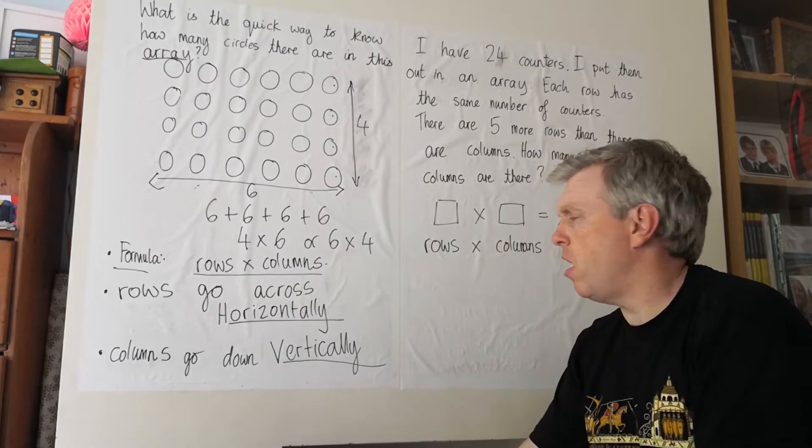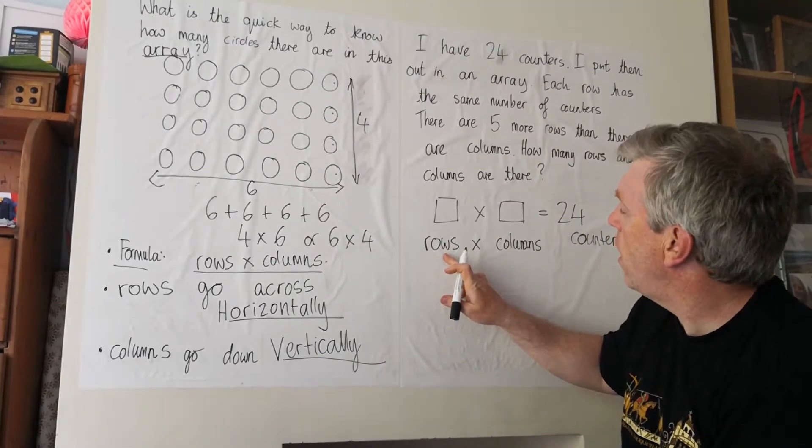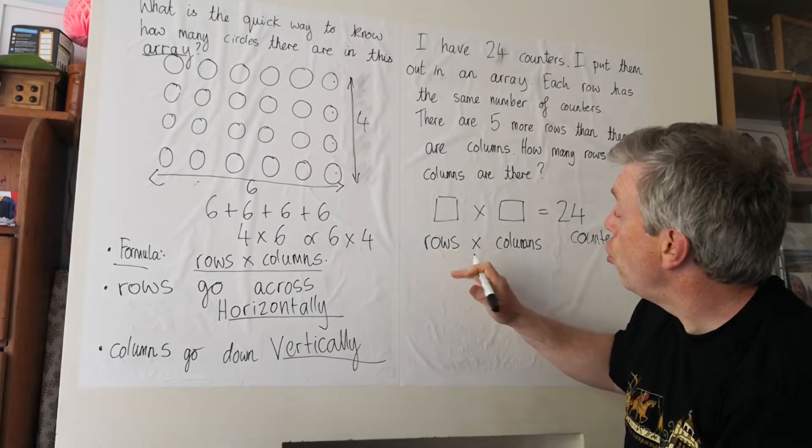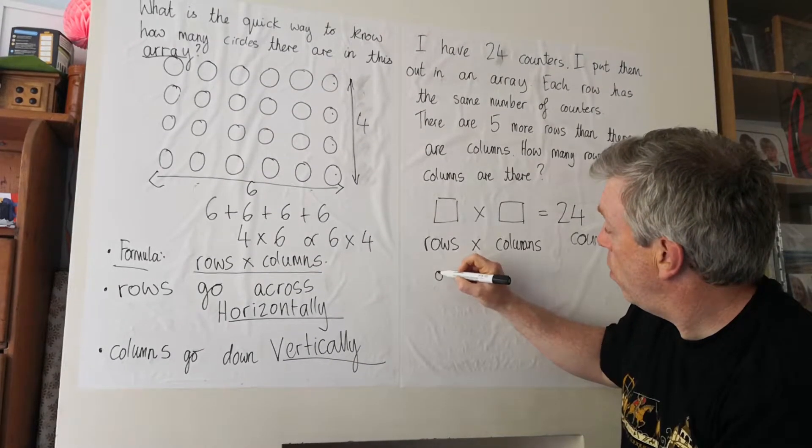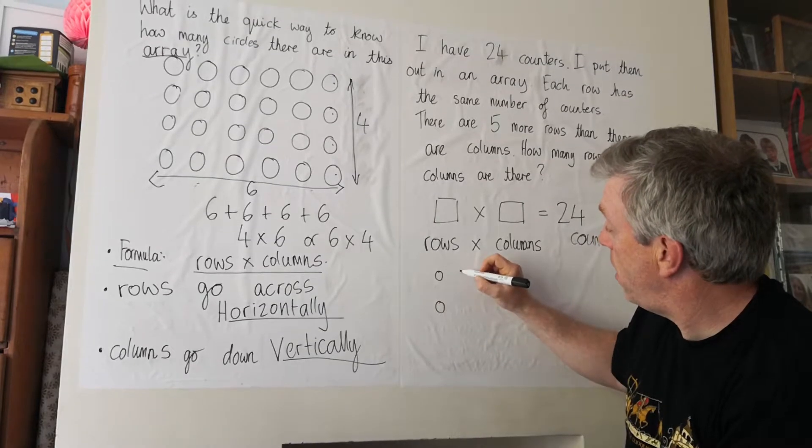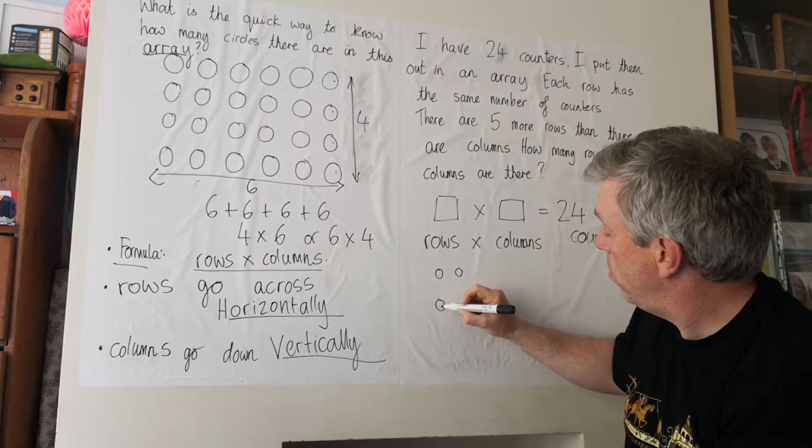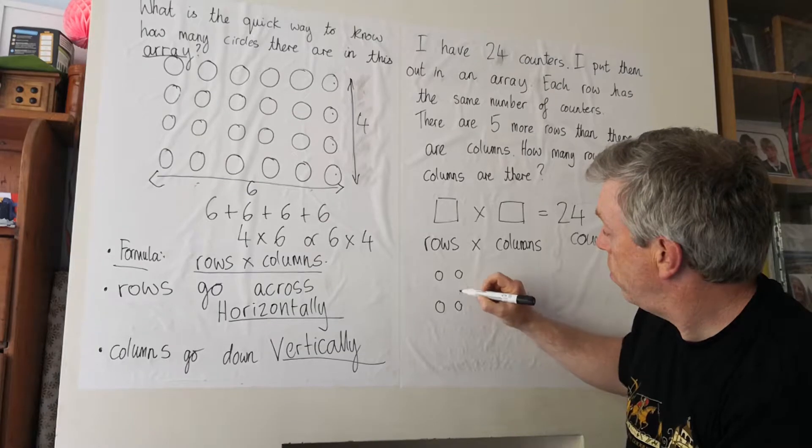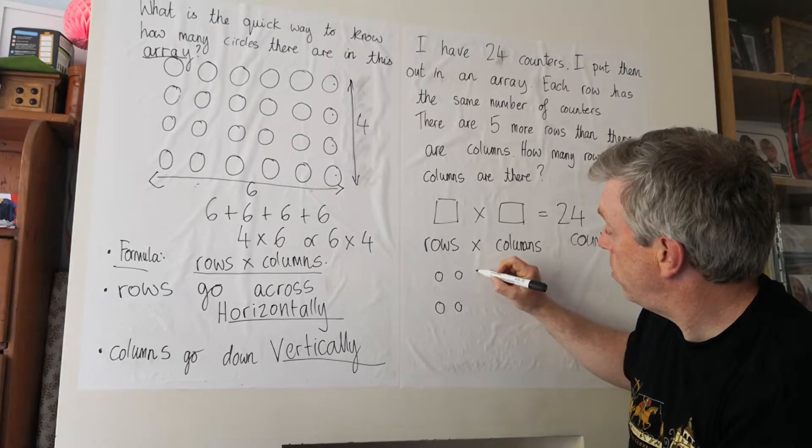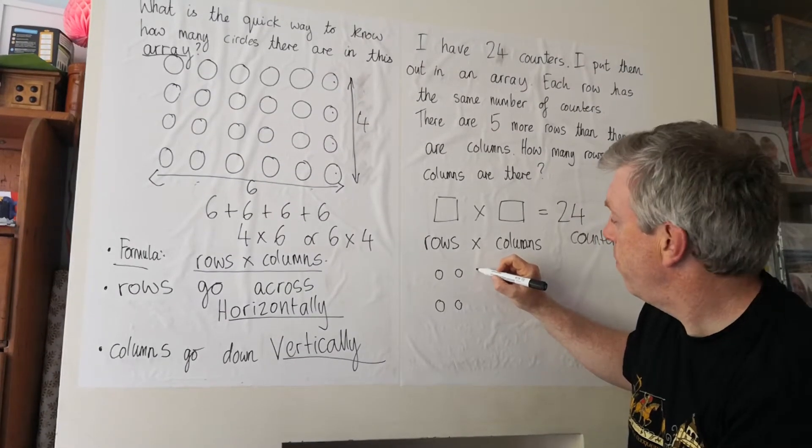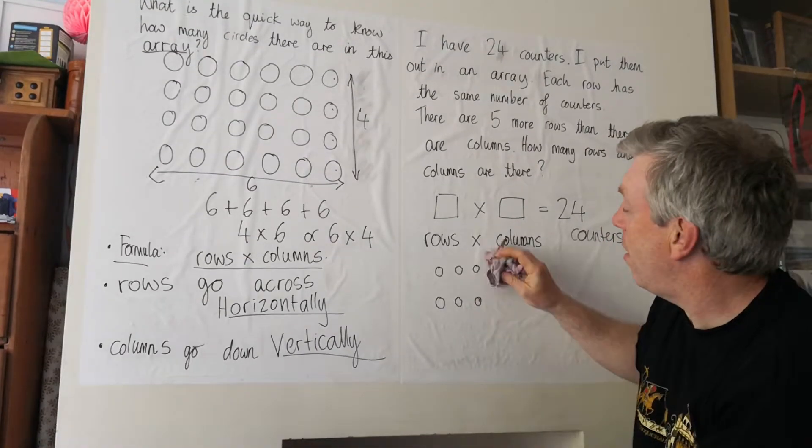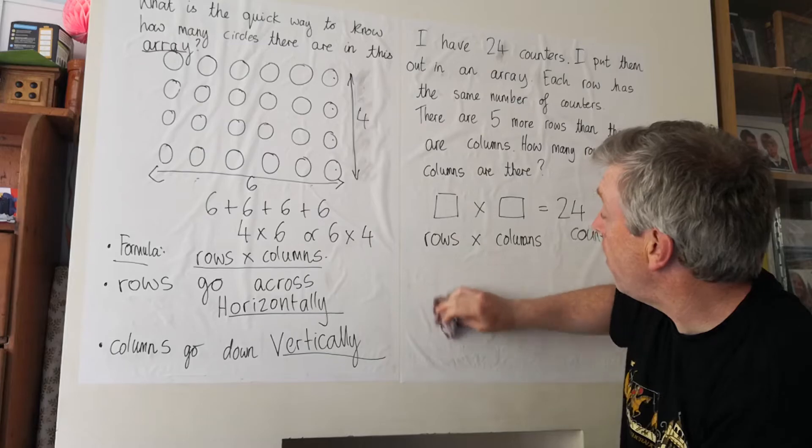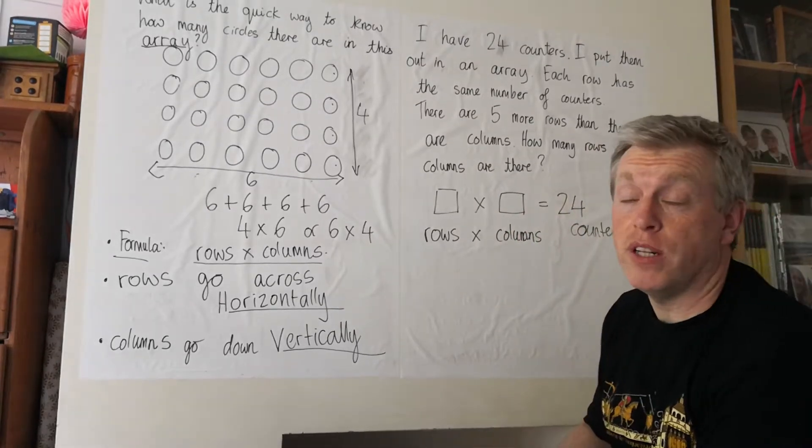It's the number of rows times the number of columns must give us 24 counters. What do I mean by that? Well, let's imagine that I had two rows. One, two rows. Then, now I've got one, two, two times two. That's not 24. Three times two. Now, hold on. We don't want to do it like that either. We're thinking of a number times the number to make 24.